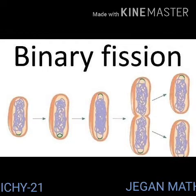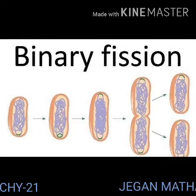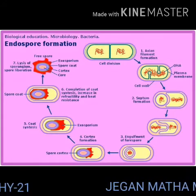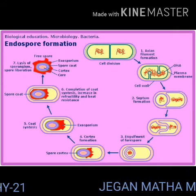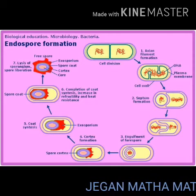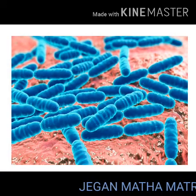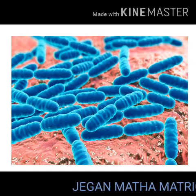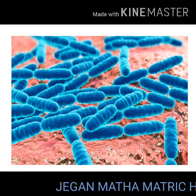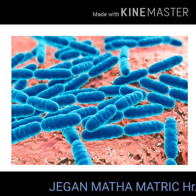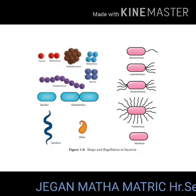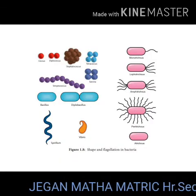The cells will divide into two daughter cells. Endospore formation means the spores are formed within the bacteria itself inside, so only it is called endospore formation. They exhibit variation which is due to genetic recombination, achieved through conjugation, transformation, and transduction.